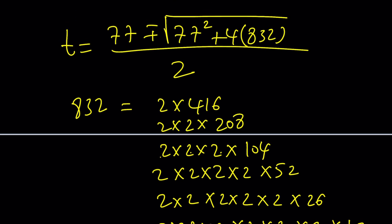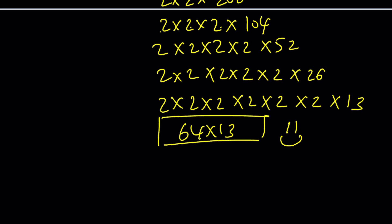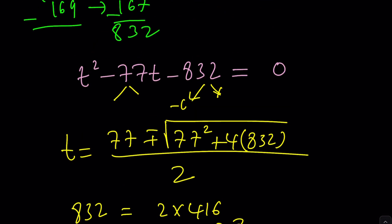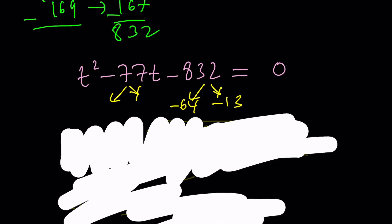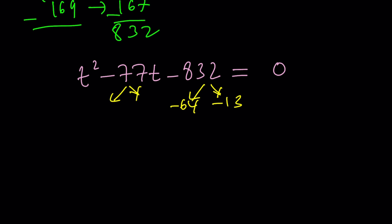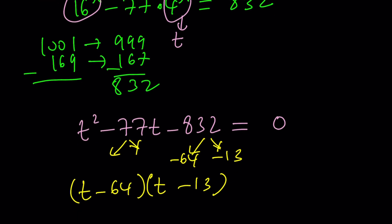I want the sum to be negative 77. Got it — they both have to be negative, obviously, which makes sense. Negative 64 and negative 13: notice that their sum is negative 77. So now we factor the quadratic. That's much better than the quadratic formula — factoring was a little time-consuming, but you get the idea. We write it as (t minus 64)(t minus 13). 64 was expected because t was 4 to the x, so we might as well go with powers of 4.